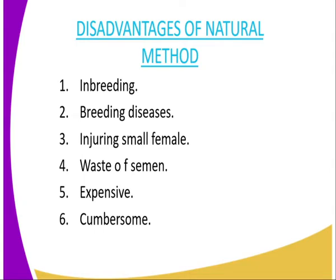Then it is very expensive because the farmer needs an extra piece of land to grow pastures for raising the bull, which is an extra expenditure. Then it is cumbersome — whenever you want to use the natural mating method, you must transfer the bull to where the cow is, making the process very tiresome.